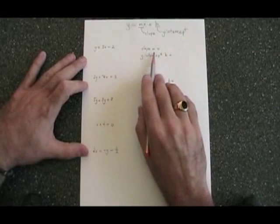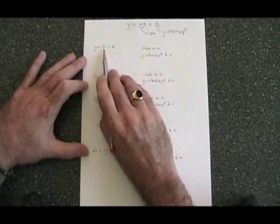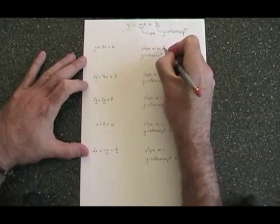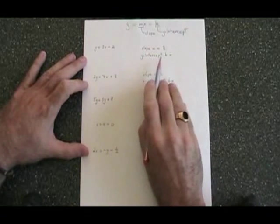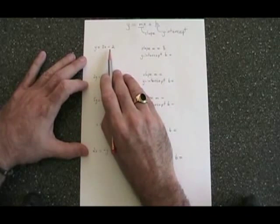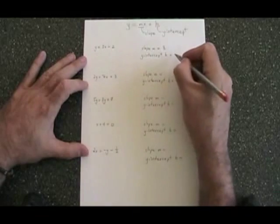The slope m is equal to the numerical coefficient of x, so in this case the slope is 3. The y-intercept b is equal to the constant term with its sign, so in this case b is equal to negative 2.